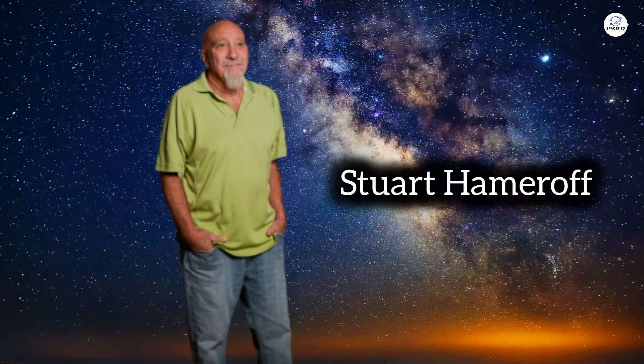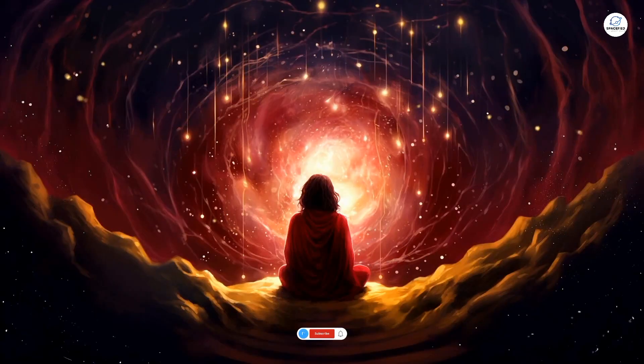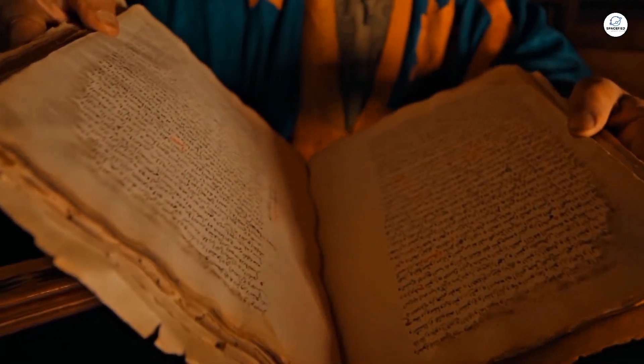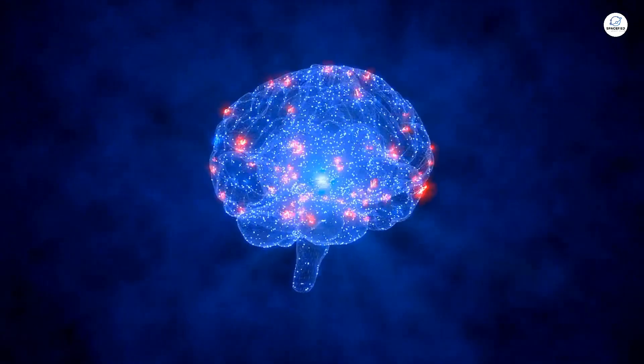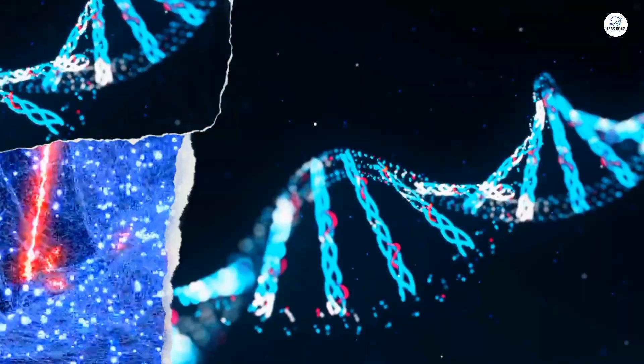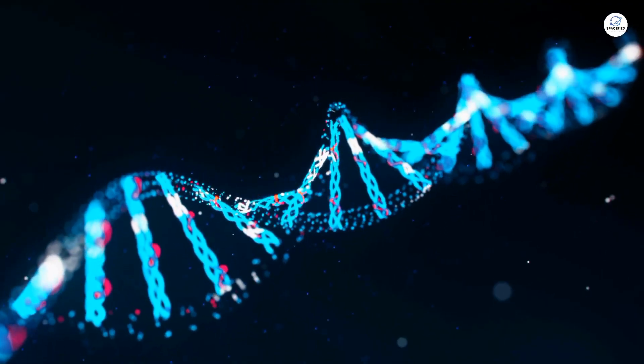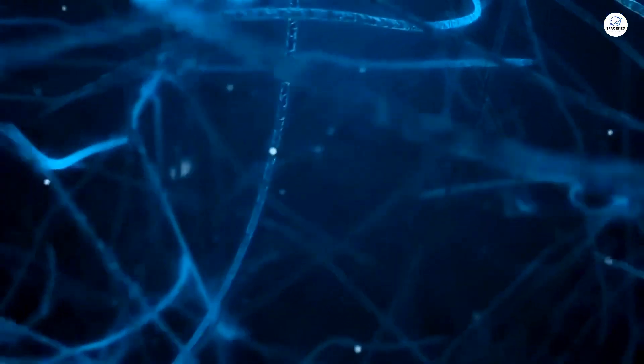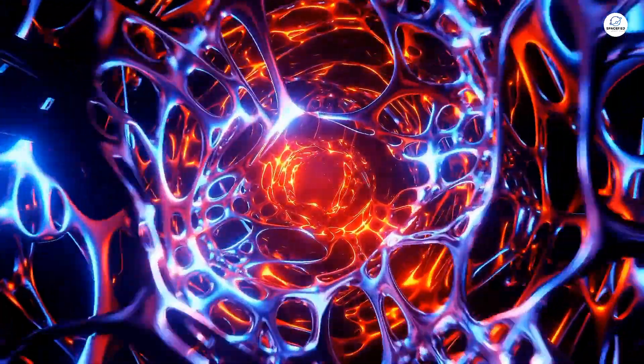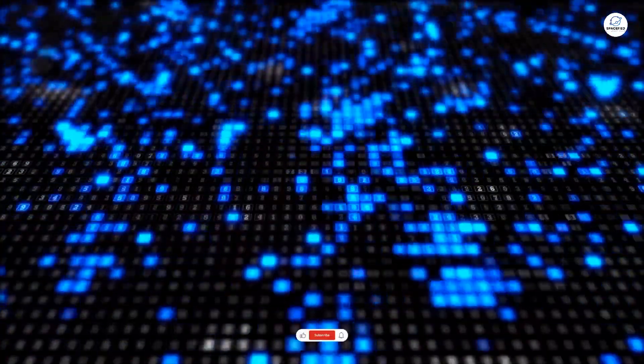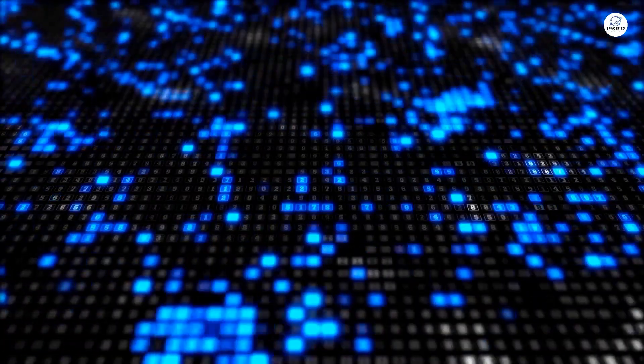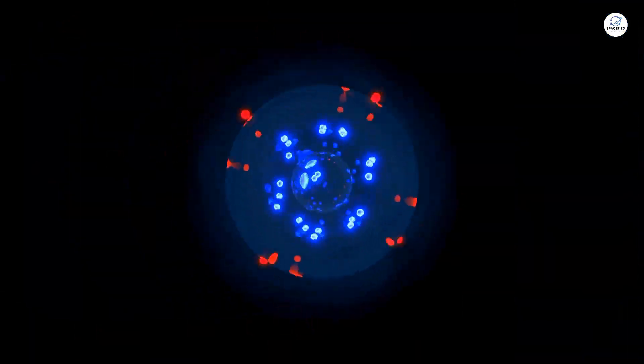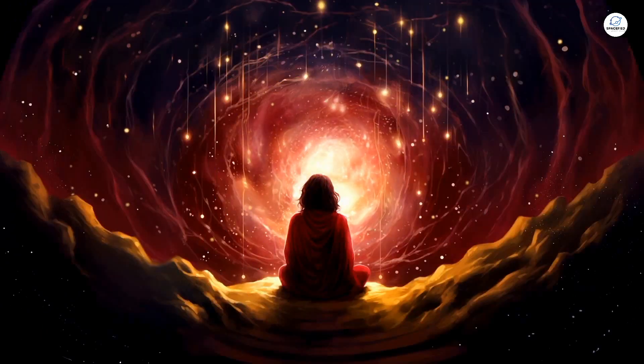Here's where Stuart Hameroff, an anesthesiologist with a deep curiosity for consciousness, enters the picture. In the 1990s, Hameroff read Penrose's book The Emperor's New Mind and had an epiphany. He suggested that tiny structures in brain cells called microtubules might be the answer. Microtubules are like the scaffolding of cells, providing structure and helping with tasks like transporting proteins. They're particularly abundant and uniquely structured in neurons, the cells that make up your brain. Hameroff proposed that microtubules could act as quantum computers within the brain, storing and processing information in ways far beyond classical physics. To put it simply, microtubules might be where quantum mechanics and consciousness collide.